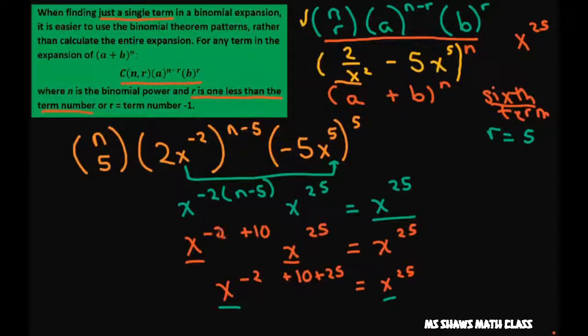So this is negative 2n. So we have, and we're just going to look at these numbers, we have negative 2n plus 35 equals 25.